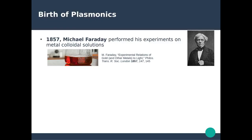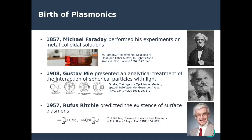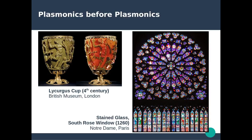What about plasmonics? Some of the pioneering work was done by Michael Faraday in 1857, who performed experiments on colloidal solutions of gold nanoparticles and studied their optical properties — not knowing at the time that he was studying plasmons. Gustav Mie, in 1908, developed the first analytical solutions of Maxwell's equations for spherical particles, a very extensive theoretical paper providing the only analytical solutions of this kind. In 1957, Rufus Ritchie at Oak Ridge National Lab wrote a theoretical paper predicting the existence of surface plasmons.